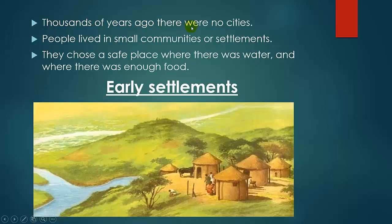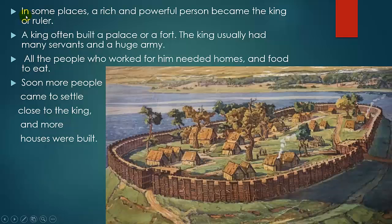Thousands of years ago there were no cities. People lived in small communities or settlements. They chose a safe place where there was water and where there was enough food. Early settlement picture — looking on your screen. In some places, a rich and powerful person became the king or ruler. A king often built a palace or a pool.